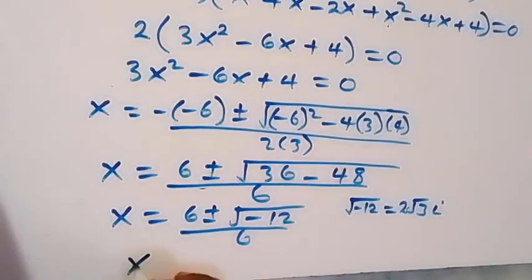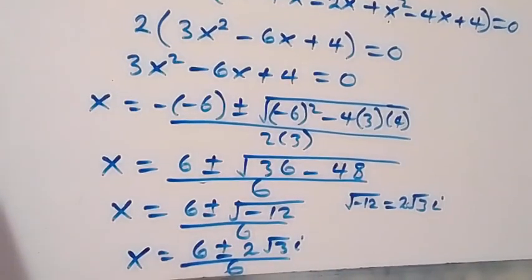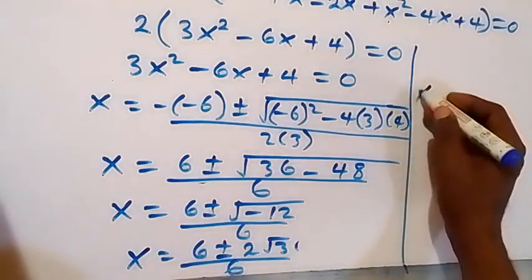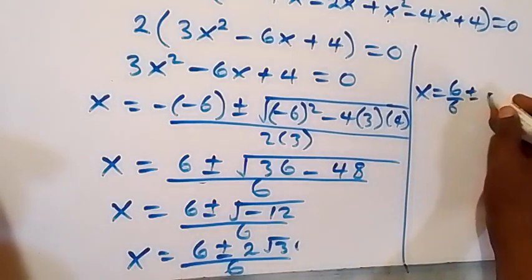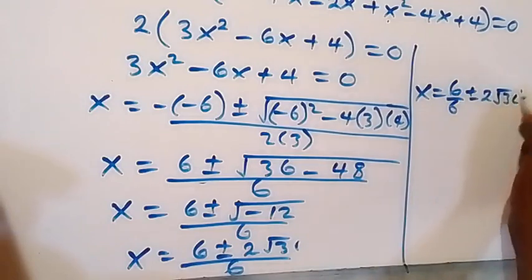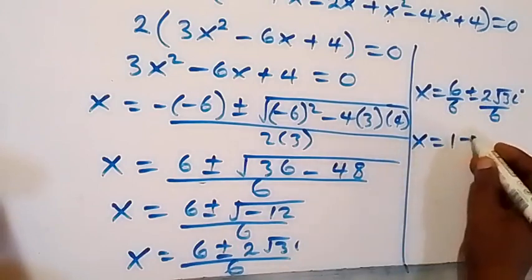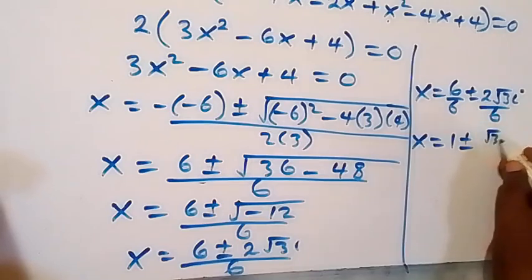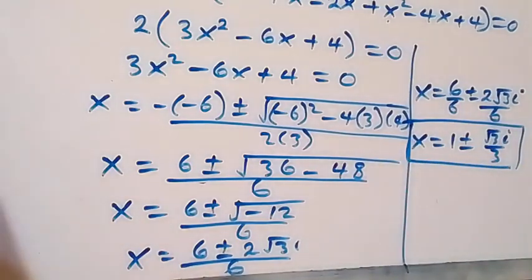We already know root of minus 12 equals 2√3·i. So x equals (6 ± 2√3·i) / 6, which separates to x equals 1 plus or minus (√3·i)/3. These are two more complex solutions from Case 2.